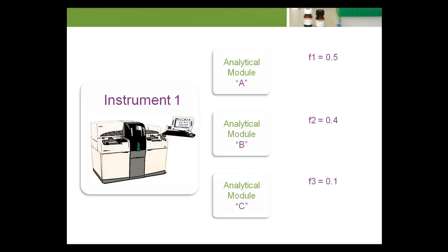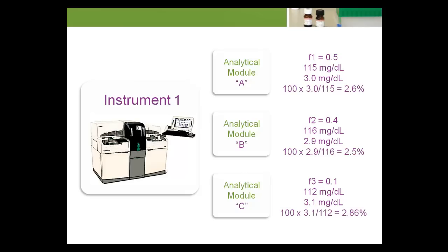The mean glucose levels for the three modules are 115 mg per deciliter, 116 mg per deciliter, and 112 mg per deciliter. The standard deviations are 3.0 mg per deciliter, 2.9 mg per deciliter, and 3.1 mg per deciliter, giving individual coefficients of variation of 100 times 3.0 over 115 equals 2.6%, 100 times 2.9 over 116 equals 2.5%, and 100 times 3.1 over 112 equals 2.86%.